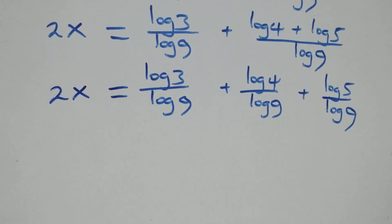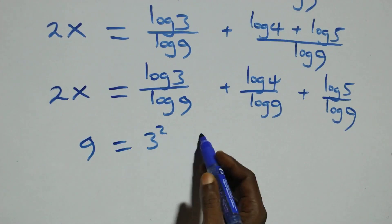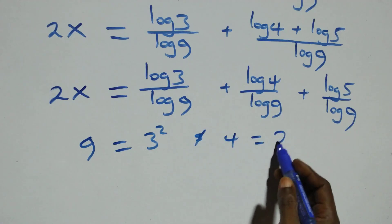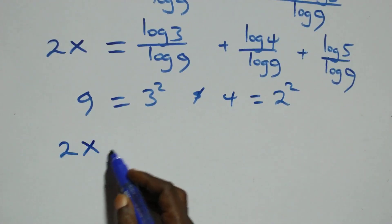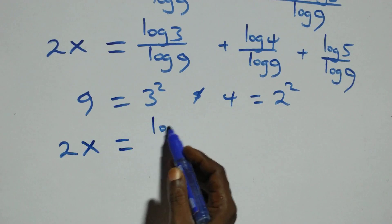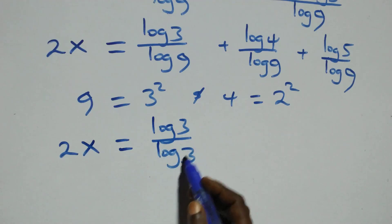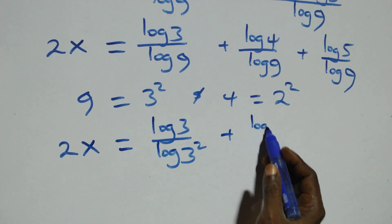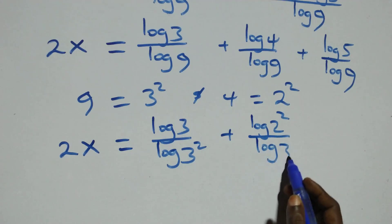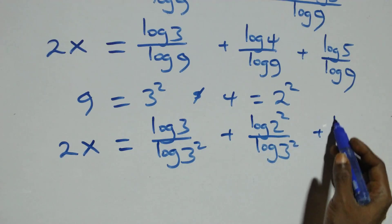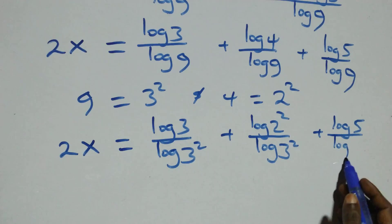From here we can express 9 as 3 times 3, that is 3 squared, and also 4 as 2 times 2, that is 2 squared. So what we have becomes 2x equals log 3 over log 3 squared, plus log 2 squared over log 3 squared, plus log 5 over log 3 squared.